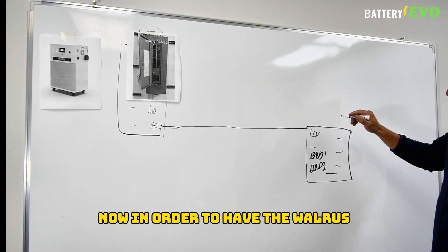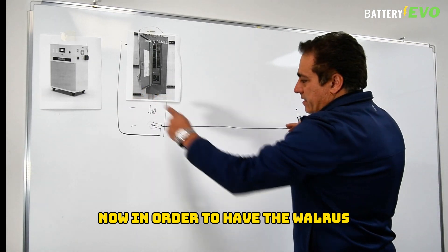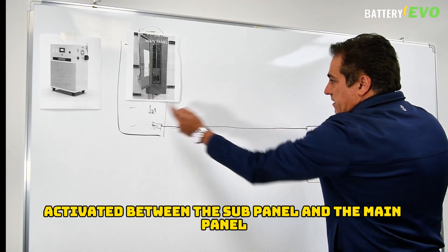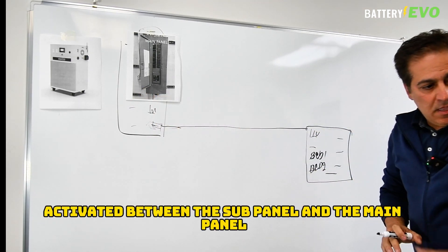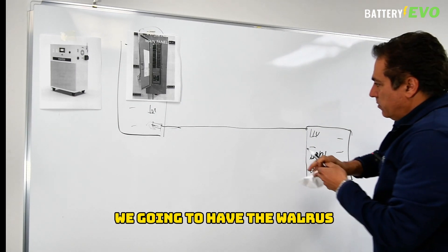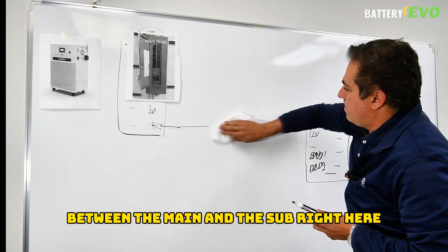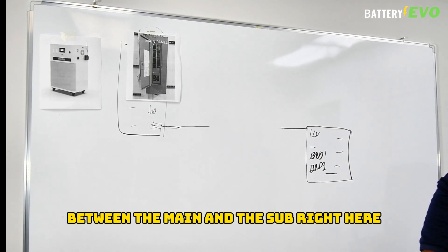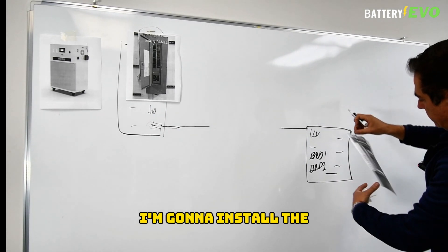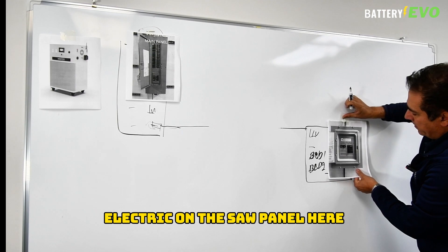Now in order to have the wireless activated between the sub panel and the main panel, what we're going to do is have the wireless between the main and the sub right here. I'm going to install the electrical on the sub panel here.